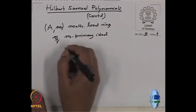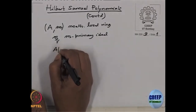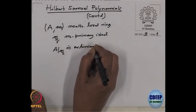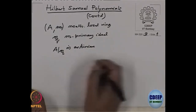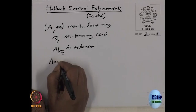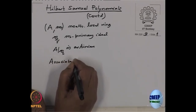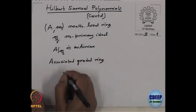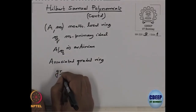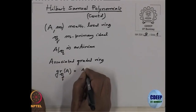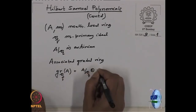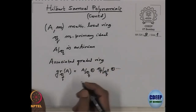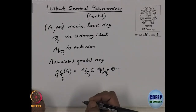This implies that A by Q is Artinian. We then consider the associated graded ring, denoted by GR_Q(A), which is A/Q ⊕ Q/Q² ⊕ … and so on. This is a standard graded A/Q algebra.